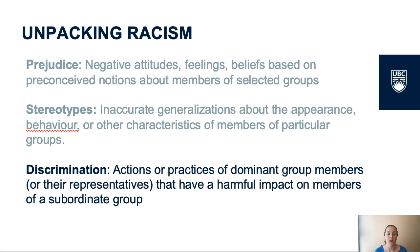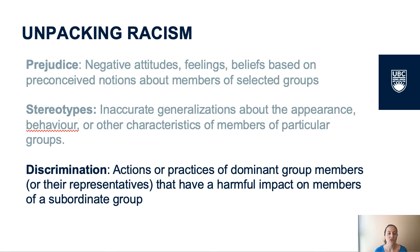Discrimination occurs when prejudice and stereotypes are put into action. Discrimination is defined as actions or practices of dominant group members or their representatives that have a harmful impact on members of a subordinate group. There are two basic forms of discrimination. De jure discrimination is legal discrimination which is encoded in laws — examples in the Canadian context are the Chinese head tax and parts of the Indian Act. De facto discrimination is informal discrimination which is entrenched in social customs; it's not legally sanctioned, but it happens anyway.